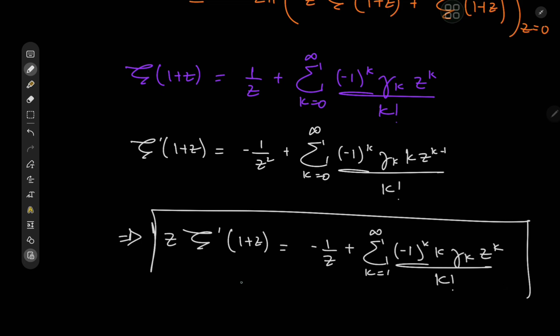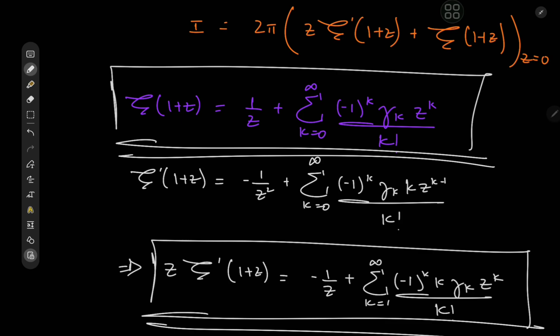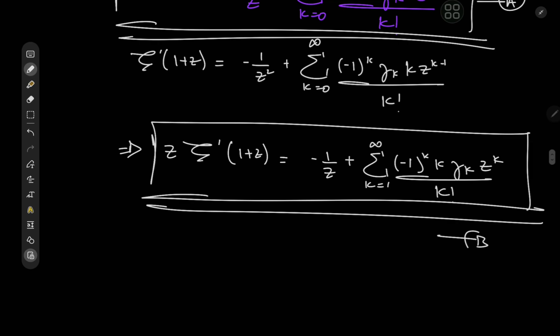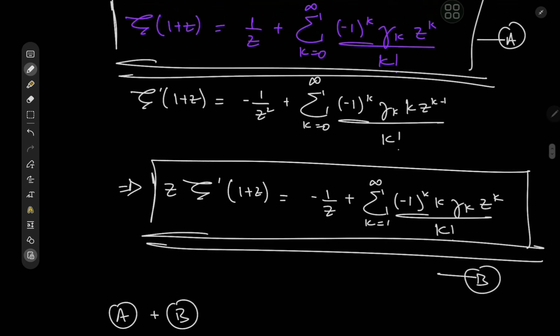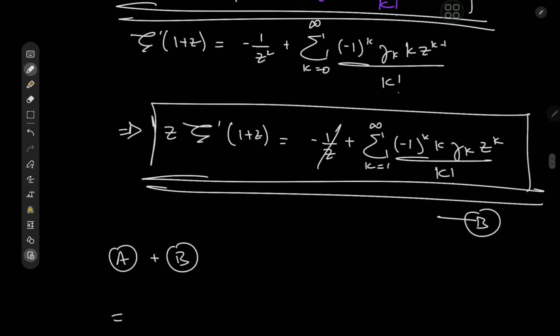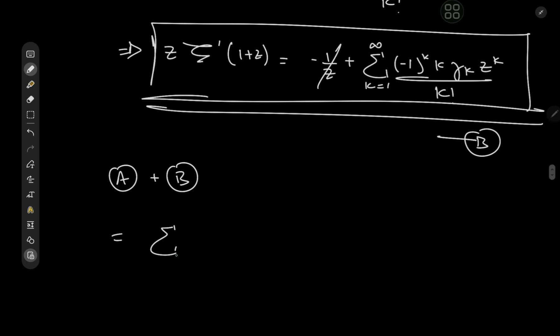Okay, cool. So we have one Laurent series expansion here. And for the other term, we have this Laurent series expansion here, and we just need to add them up. So I'll call this thing a, I'll call this thing b. And we have a plus b terms being added up to give. Okay, so we have 1/z and -1/z. So they just cancel out quite brilliantly. See, I told you it will come in clutch.